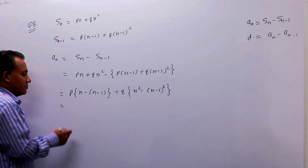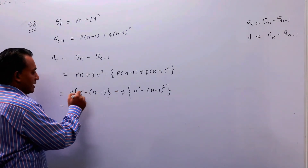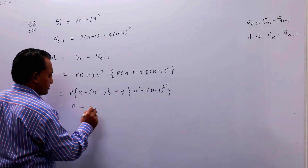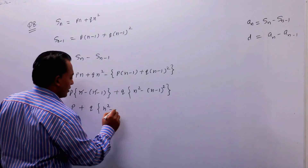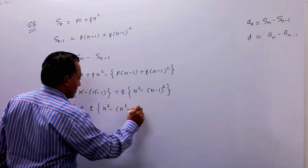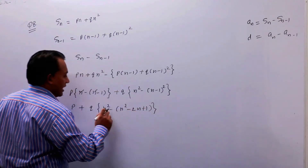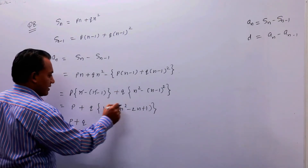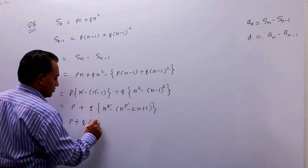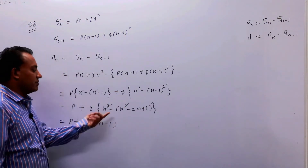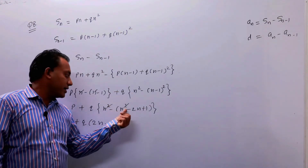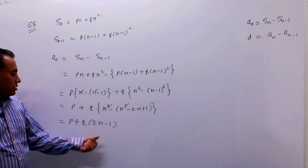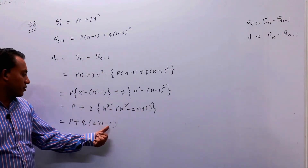Solve करने पर: n से n cancel, सिर्फ P बचेगा। और यहां Q के साथ n² minus (a-b)² वाला formula लगाएं, तो n² minus (n² minus 2n plus 1)। n² से n² cancel हो जाएगा, तो बचेगा P + Q(2n minus 1)। इसे simplify करने पर an = P + Q(2n − 1)।